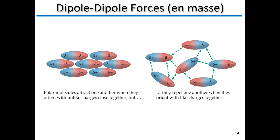Why did I say in every direction? Because we have a 3D network of these molecules. What you'll end up seeing is clusters — sort of a cluster of negative, a cluster of positive, and so on. They orient themselves throughout the entire sample of matter — throughout the entire liquid or solid — so that they always maximize the attractive forces and minimize the repulsive forces. If they get the negative charges too close, those will start to repel. So they orient themselves to maximize attractive forces and minimize repulsive forces.